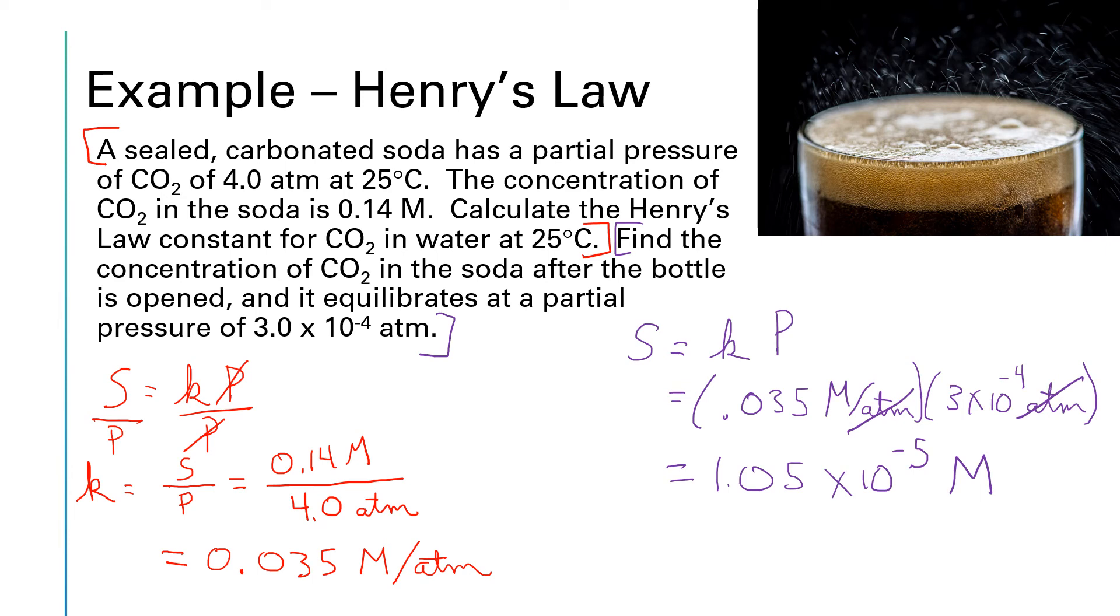In terms of significant figures, the Henry's law constant only had two significant figures and our pressure, if you go back and look at the actual statement of the problem, had two significant figures. So I really should round this to the second significant figure, which would be in that first decimal place. The 5 says we round up, so it'll be 1.1 times 10 to the negative 5 molar.